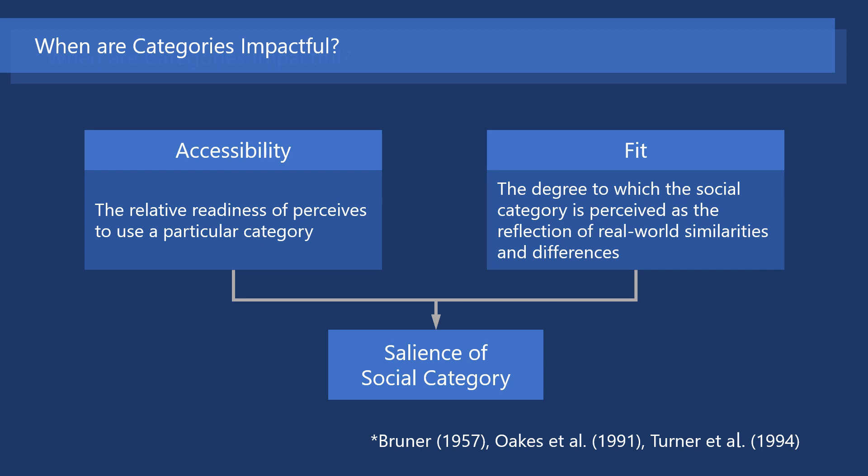Two factors increase or decrease the impact of categorization on self-definition. They are accessibility and fit. Accessibility refers to the relative readiness of perceivers to use a particular category. Fit refers to the degree to which the social category is perceived as a reflection of real-world similarities and differences. Based on Brunner's theory, Oakes and colleagues show that social categories are salient and thus impactful when both accessibility and fit are high.